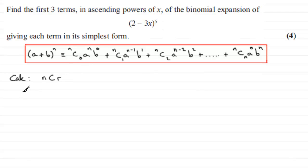Okay, so if we're doing this expansion, a plus b to the power n, in our case 2 minus 3x to the power 5, let's just write it down here. Okay, we've got 2 minus 3x then, all to the power 5.